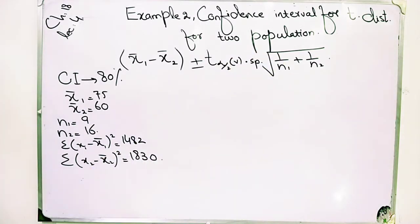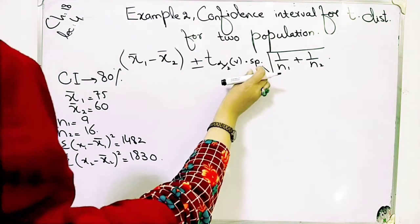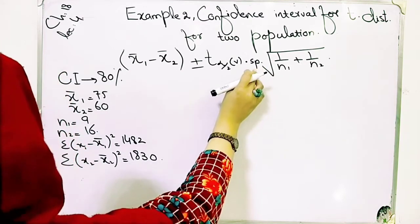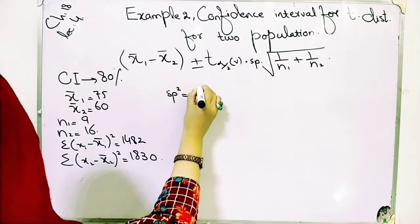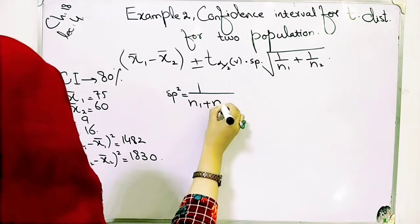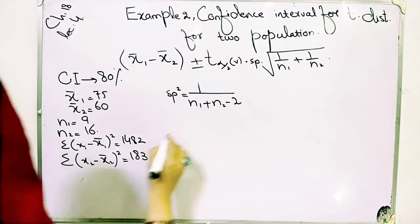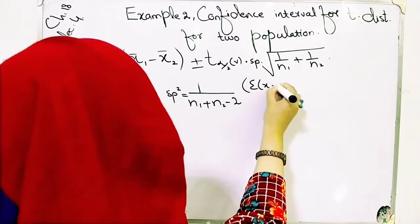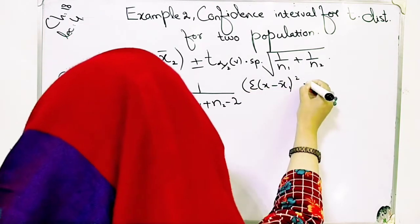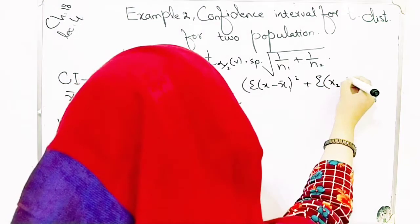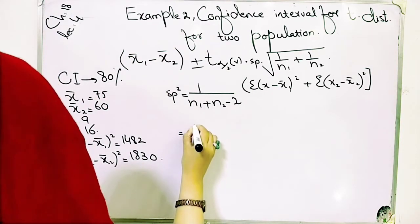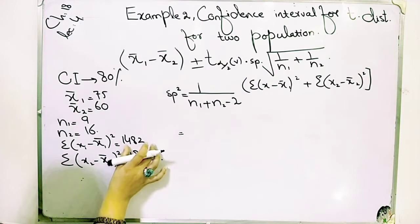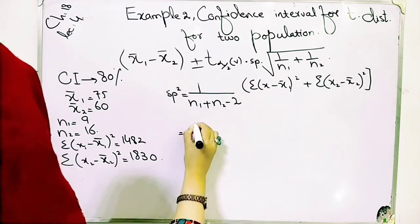The pooled estimator — we have the formula we previously discussed. If any student wants to understand it, you can see my previous lecture where I explained the pooled estimator. We have two populations involved, so two sample sizes are involved. The formula is: summation of (x₁ minus x̄₁) squared plus summation of (x₂ minus x̄₂) squared, divided by (n₁ + n₂ - 2). The values are 14.82 and 18.13.